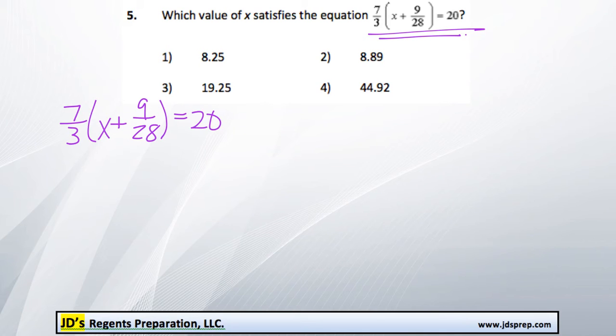I'm going to start by distributing the 7 thirds and multiplying it into the brackets here. So we'd get 7 over 3x plus, I'm just going to do the math here on the side.